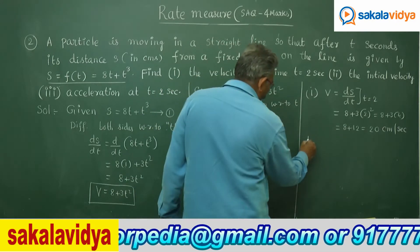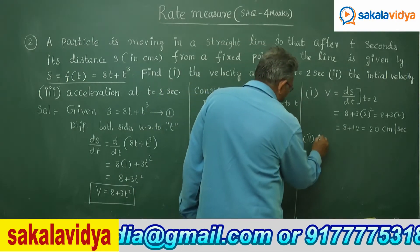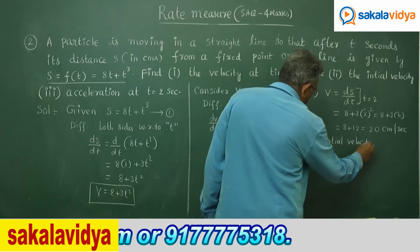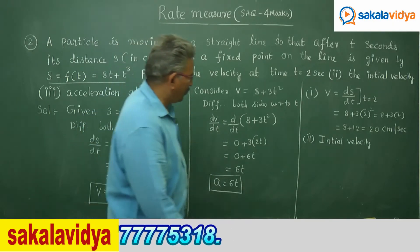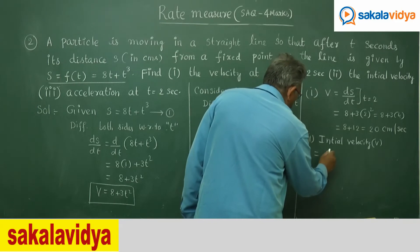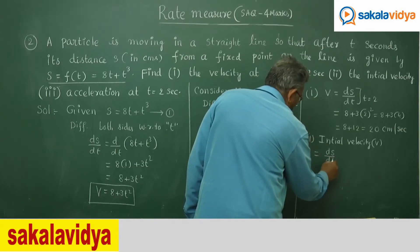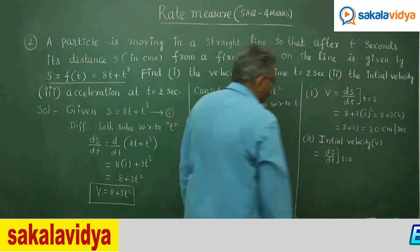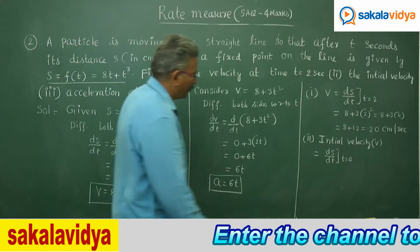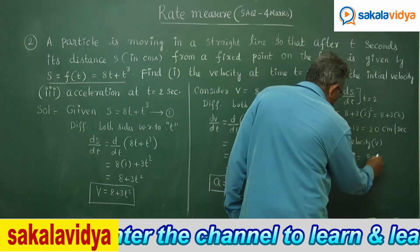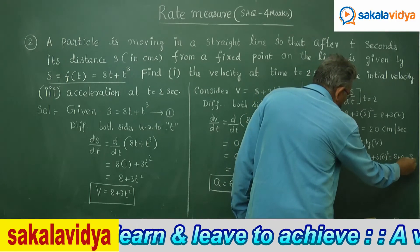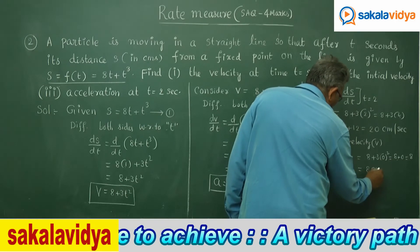For initial velocity, do not get confused — initial velocity is ds by dt at the instant t equal to 0. So substituting: 8 plus 3 into 0 squared equals 8 plus 0 equals 8. This is equal to 8 centimeters per second.